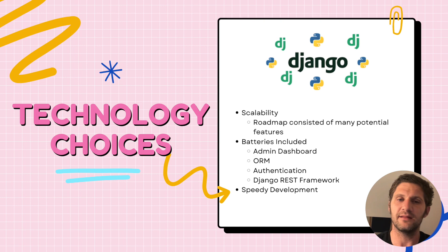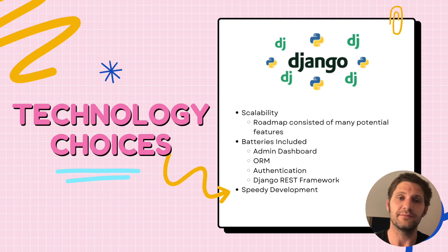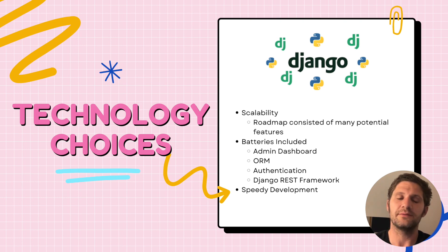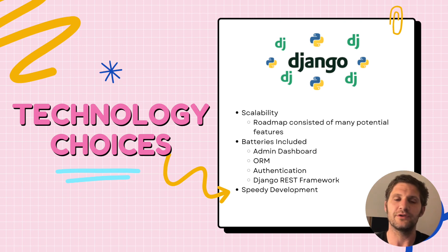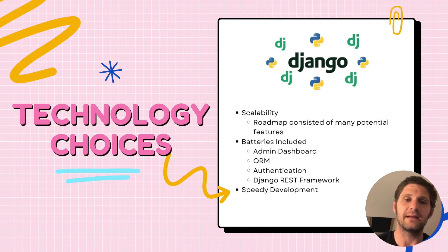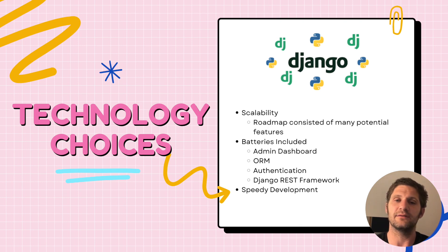The second was that Django is what's known as a batteries-included framework, and being able to utilize a framework like that — with things built in like the Django REST framework for building out the API the front-end team could use — was really helpful in order to speed up development. That short development timeline was another thing Django offered, with features like an admin dashboard helping to cut down on our timeline significantly.